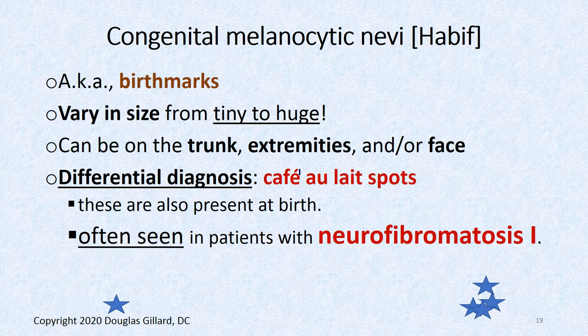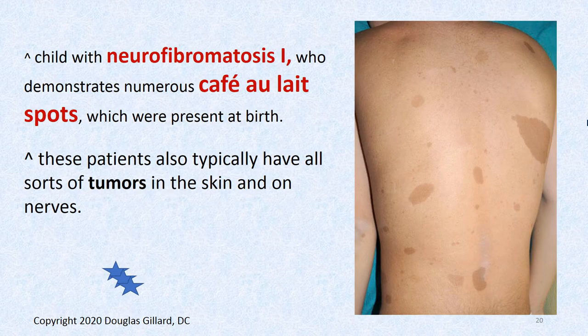Congenital melanocytic nevi vary from tiny to huge and can be on the trunk, extremities, and face. They can be confused with neurofibromatosis type 1 café-au-lait spots, but café-au-lait spots are much lighter. True nevi would be much darker brown or even black, and moles born with the patient would be darker and possibly hairy.